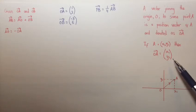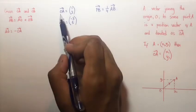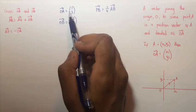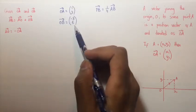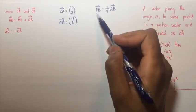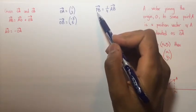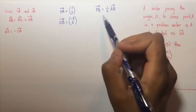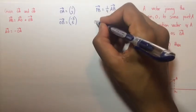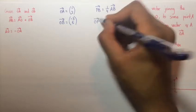So the question tells us that position vector OA is equal to (1, 2) and vector OB is (-3, 5). It also tells us that P lies on AB such that the vector PB is equal to 1/4 of AB and we are asked to find the vector OP.